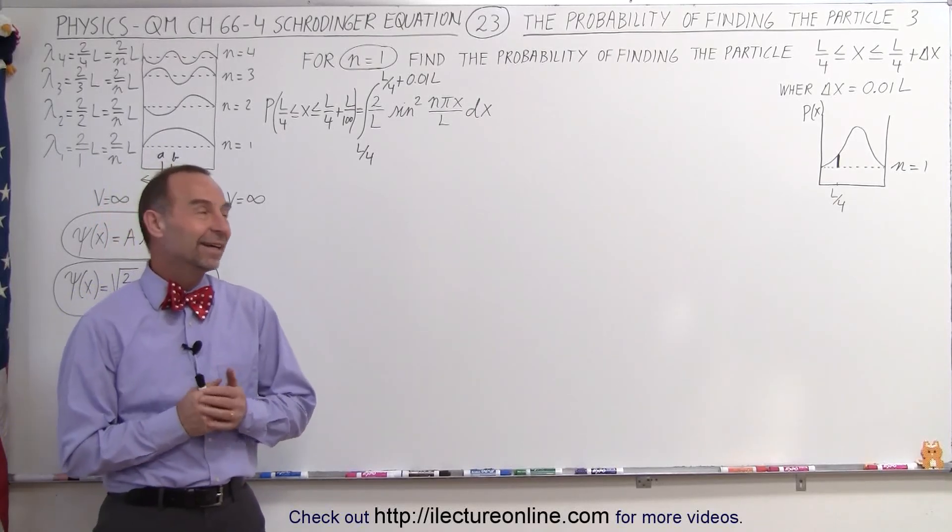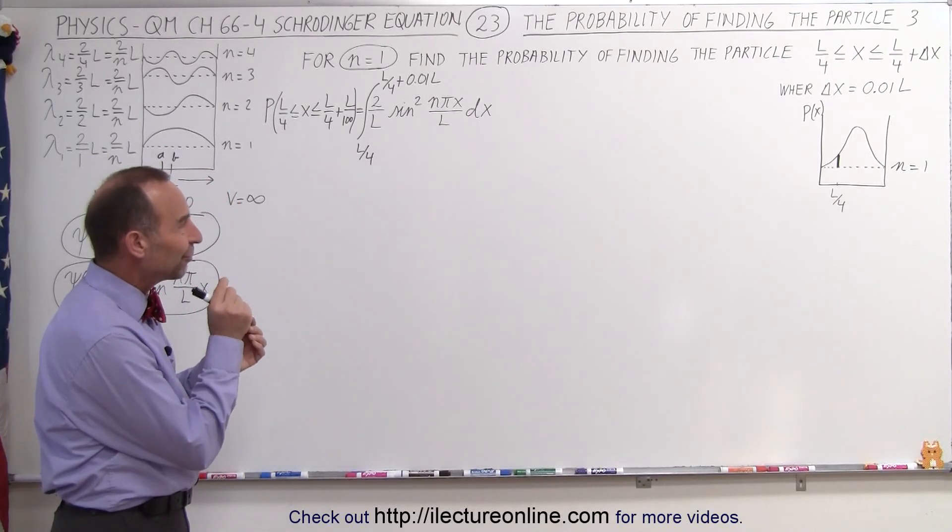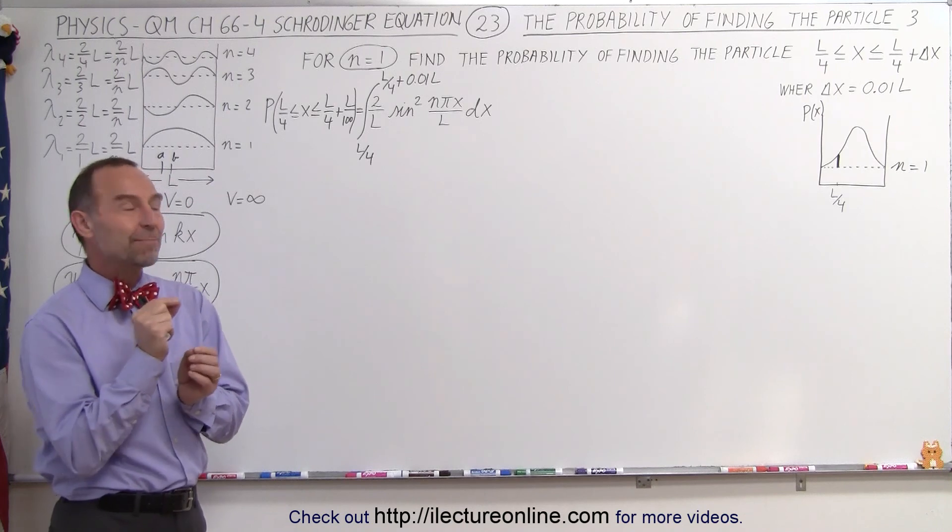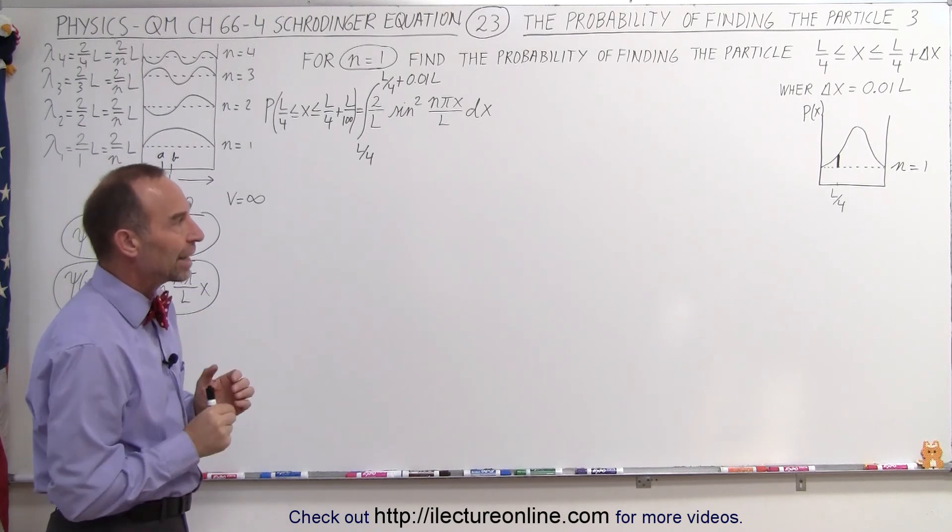Welcome to ElectronLine. Now what we're going to do is find the probability of finding the particle in a particular location.